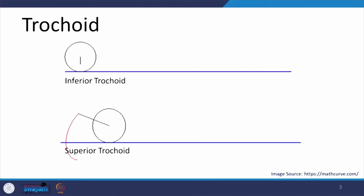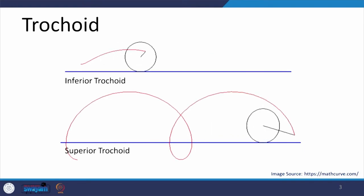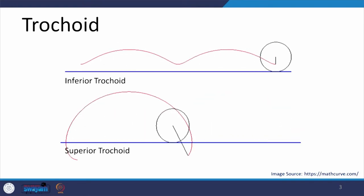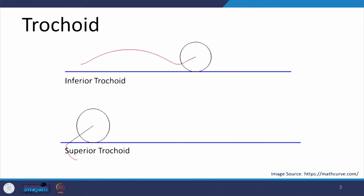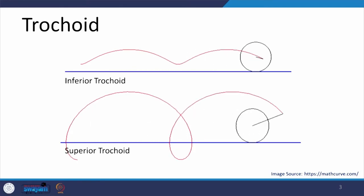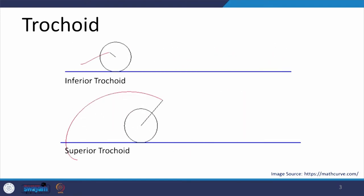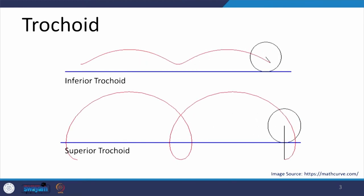We will then see trochoids. Suppose this point P for which the path was being traced as cycloid is not on its circumference but inside the circle or outside the circle — the path which will then be traced will be called a trochoid. If you look at the screen, the inferior trochoid is the path traced if the point is inside the circle; it need not be on the circumference. If the point is outside, then the path which is traced by that point as the circle rolls along the straight line is called a superior trochoid.